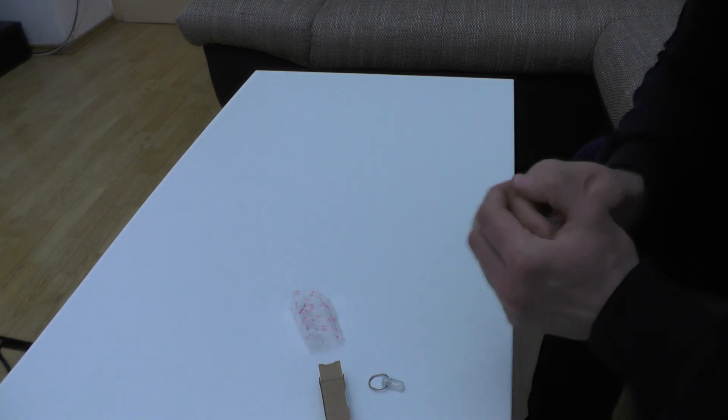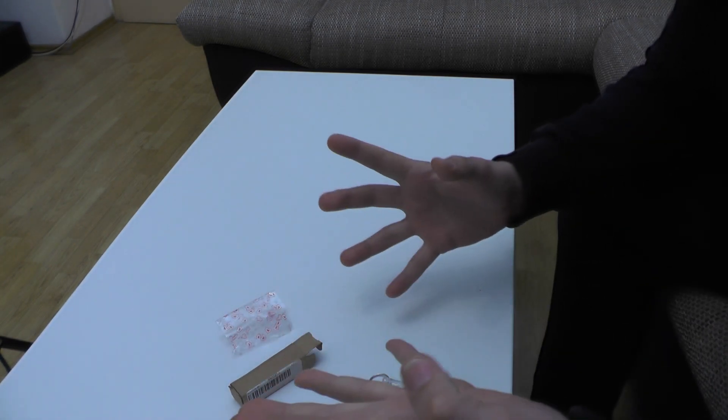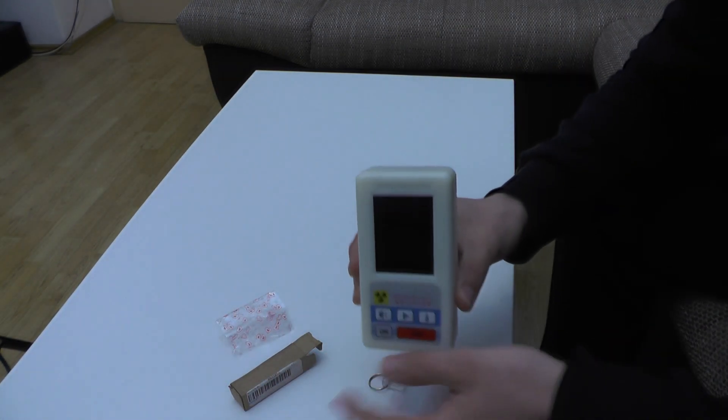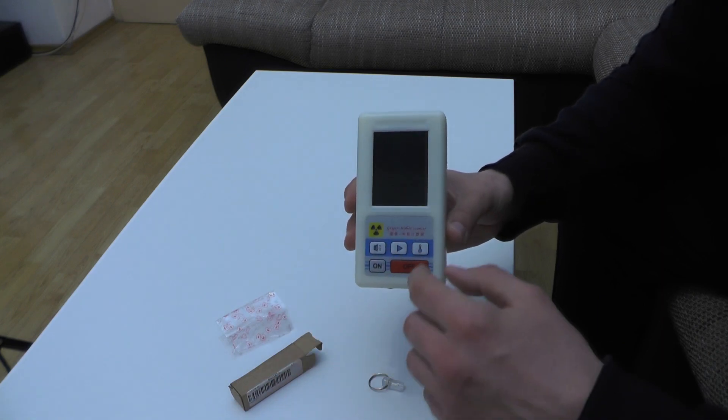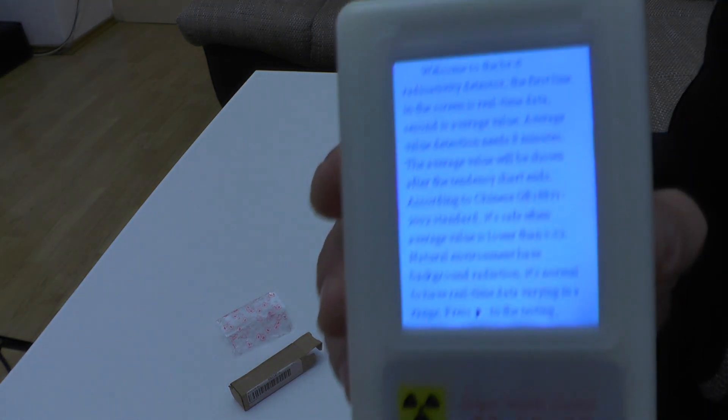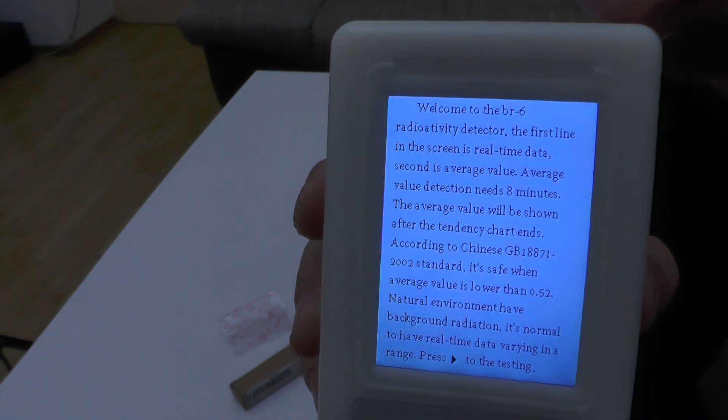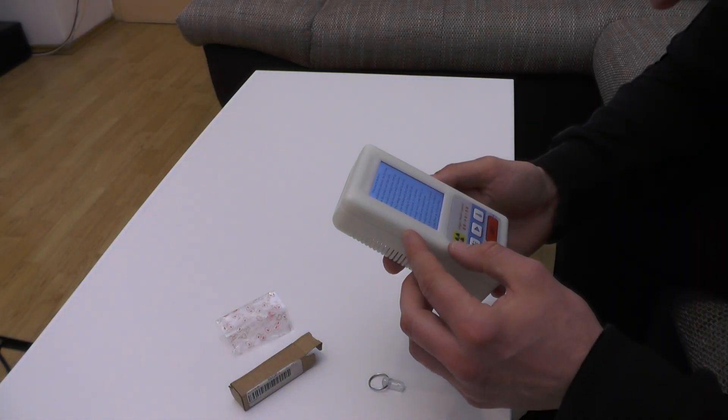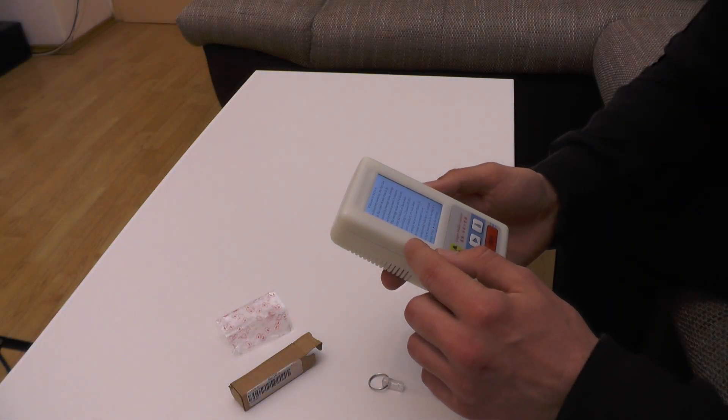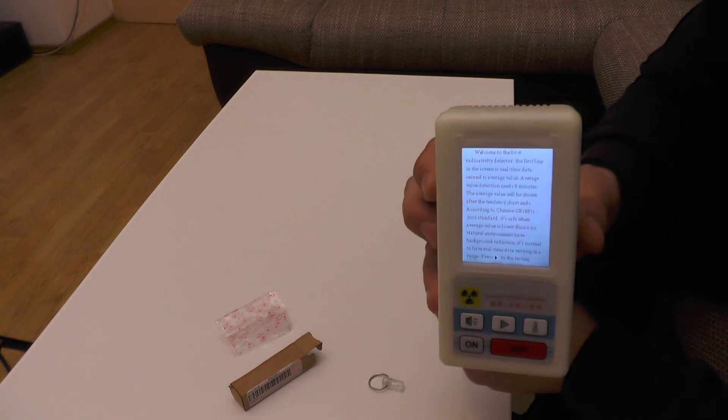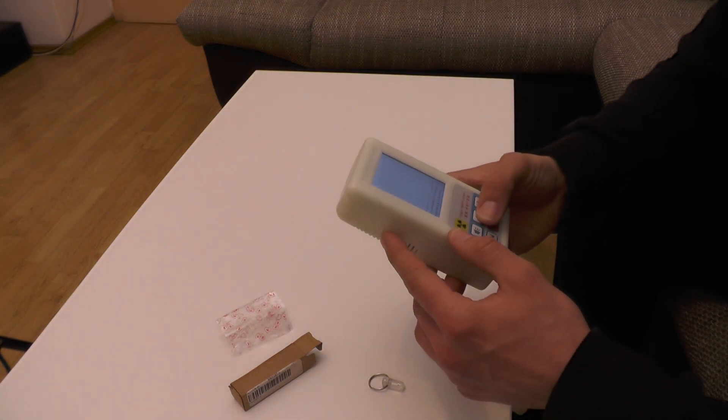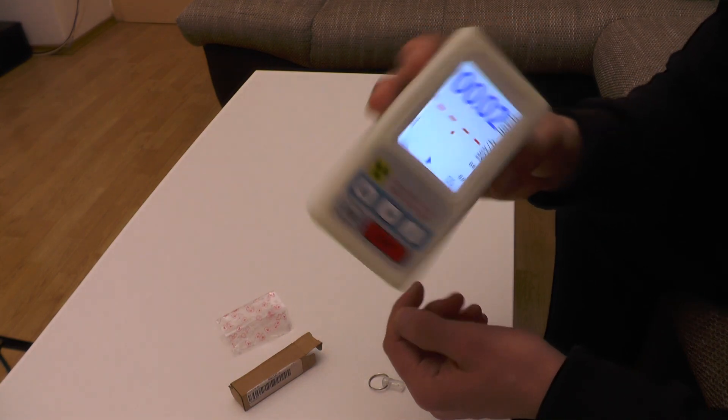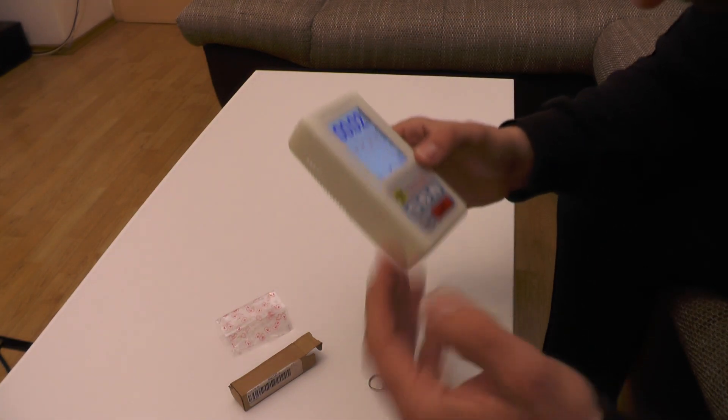Anyway, the reason I bought this thing is because I have a Geiger counter. Tada! Every true Slav has to have one. Anyway, let's turn it on. There is the text if you want to read it, you can pause it. It says that you have to have values lower than 0.52, I believe these are microsieverts.